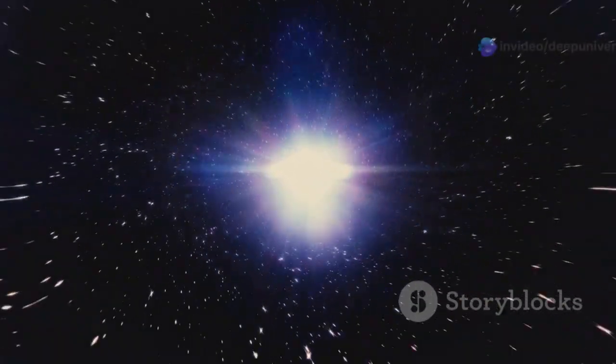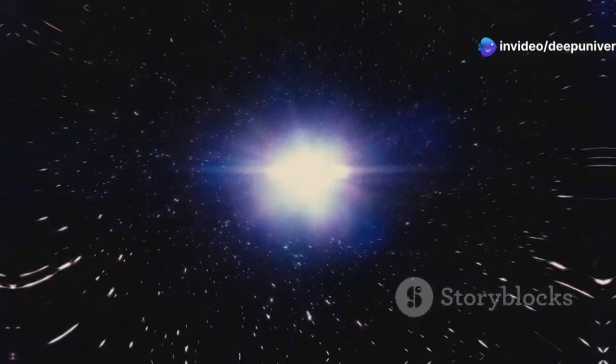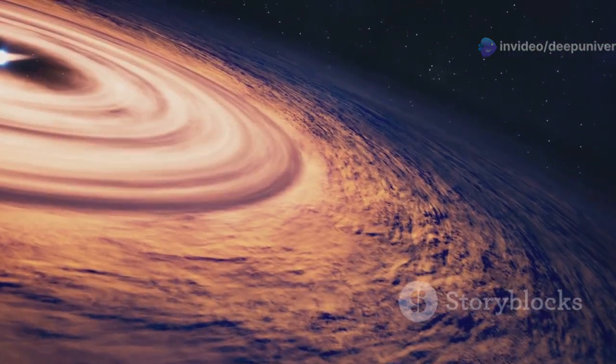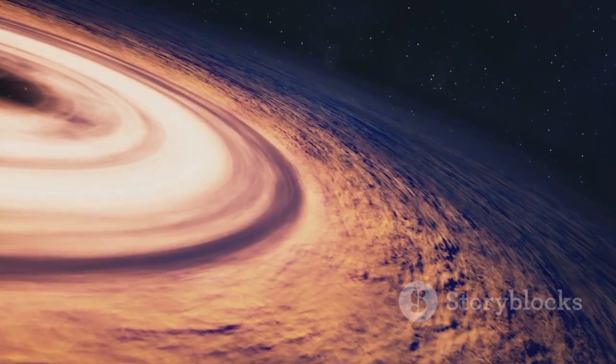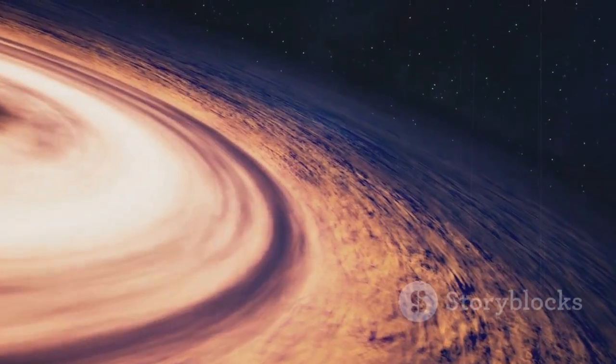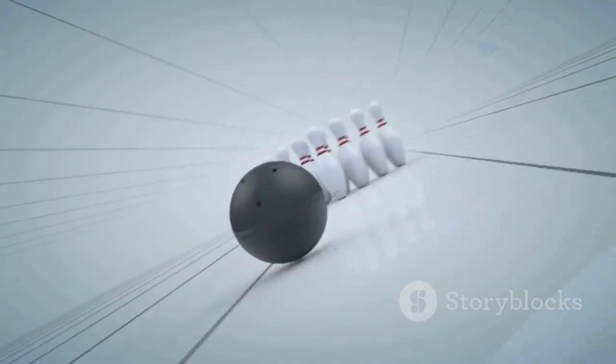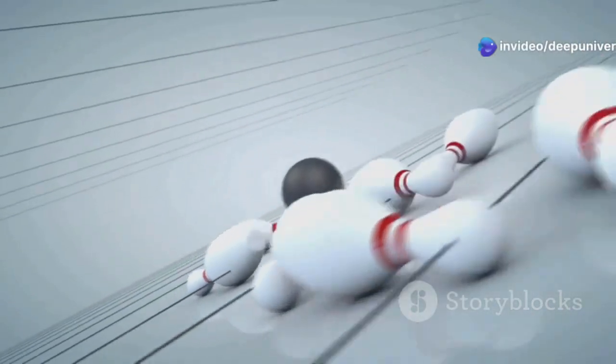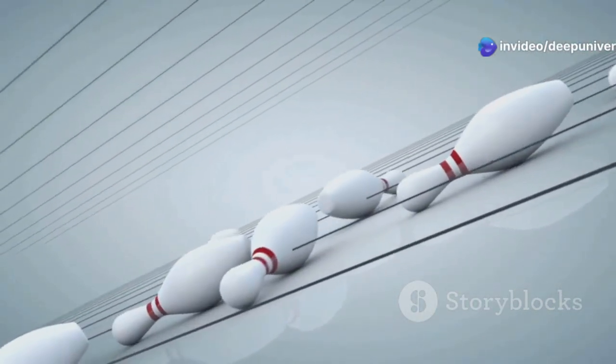But black holes do more than just heat things up. Their influence extends far beyond the immediate vicinity of the accretion disk. They warp the fabric of space-time itself. This warping effect is a direct consequence of the black hole's immense mass and gravitational pull. Imagine a bowling ball placed on a stretched sheet. The ball creates a dip, distorting the sheet's surface, much like how a black hole distorts space-time.